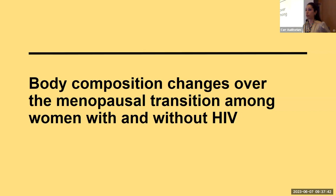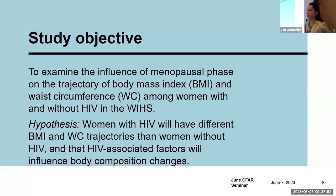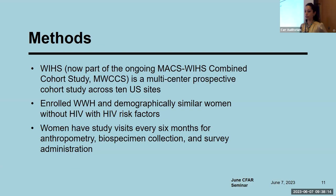With that, I'd like to segue into work we just published in CID, titled 'Body Composition Changes Over the Menopausal Transition Among Women With and Without HIV.' The objective was to examine the influence of menopausal phase on the trajectory of BMI and waist circumference among women with and without HIV in the WIHS. This was conducted within the WIHS, now part of the MACS-WIHS Combined Cohort Study (MWCCS), a multi-center prospective cohort study across 10 U.S. sites, enrolling women with HIV as well as demographically similar women without HIV but with similar HIV risk factors. Women have study visits every six months, getting BMI, waist circumference measurements, biospecimen collection, and survey administration.